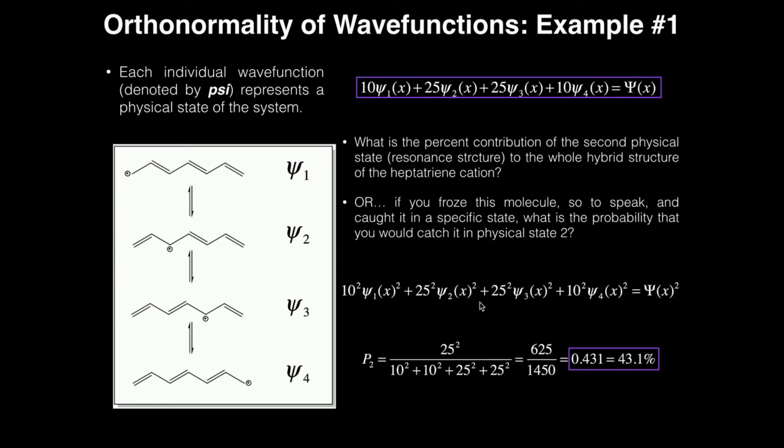Well, the way you would calculate it is you would actually take the square of all of these. But it's not like you'd have to foil all this out. It's actually a lot simpler. Because these are linear combinations and not just a regular function, you actually just take each eigenvalue and square it, and then take the eigenfunctions, ξ's, and square them. So you'd have 10 squared ξ1 squared plus 25 squared ξ2 squared plus 25 squared ξ3 squared plus 10 squared ξ4 squared. And this represents the probability that you would actually catch something in that state or the percent contribution.